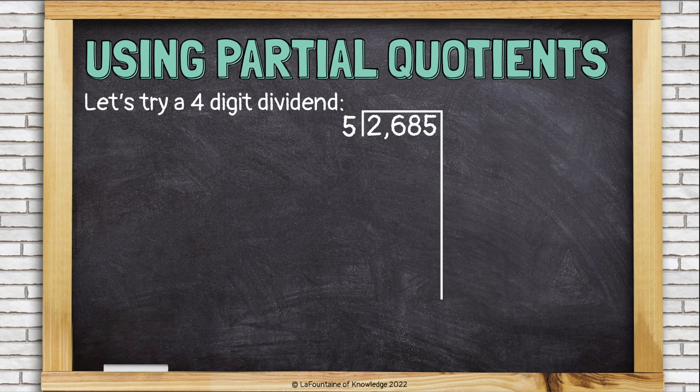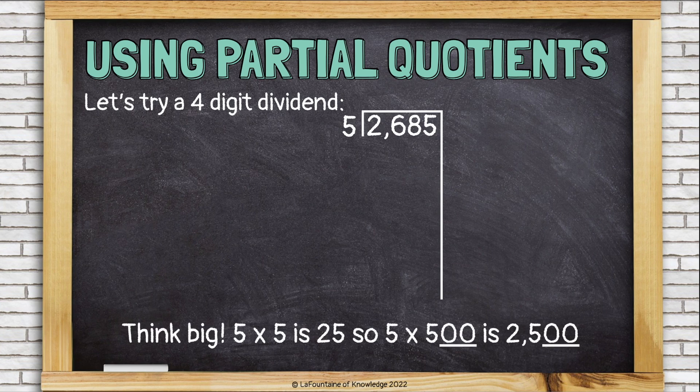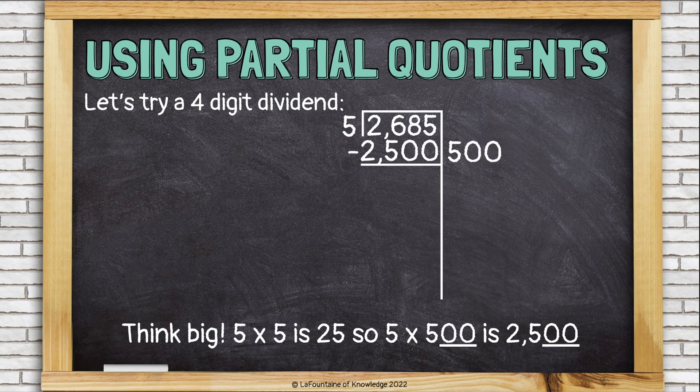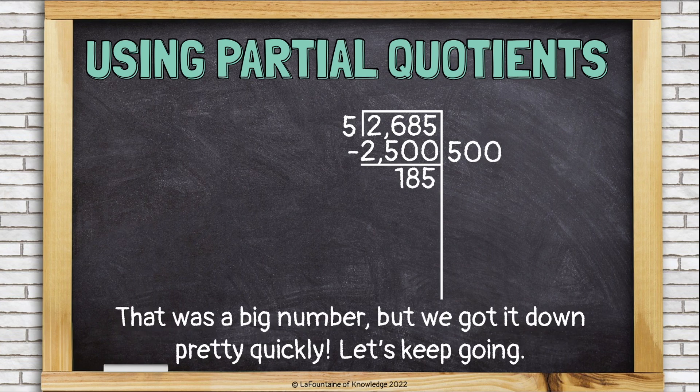Now let's look at a four-digit dividend. This is the same process, just with a little bit of a bigger number. So think big. 5 times 5 is 25, so 5 times 500 is 2,500, or 2,500. And when we subtract, we're left with 185. Wow. We got a lot of our number. We got rid of a lot of our number there.